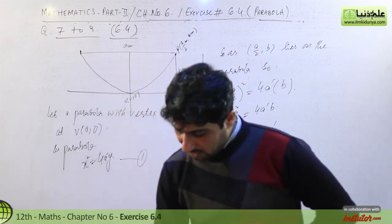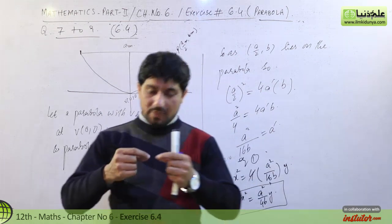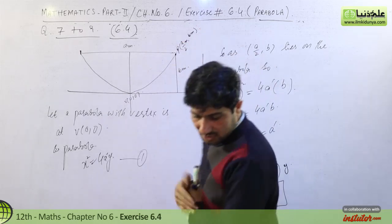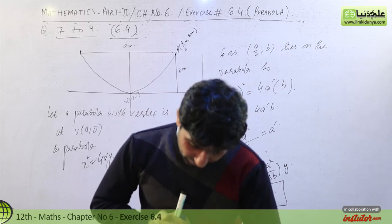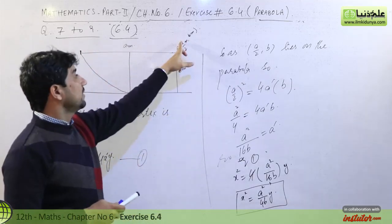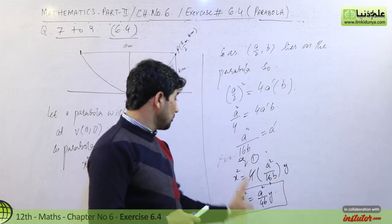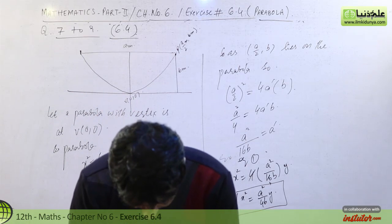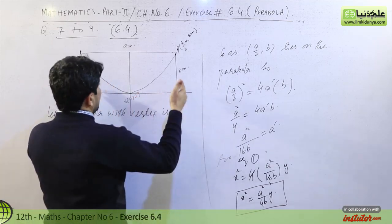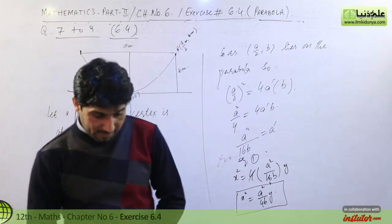Now move to the next question. An arc has a base of 100 meters and a height of 25 meters. When you set up the coordinate system, the half-span gives a point at (50, 25). The question then asks you to find the height of the arc at a point 30 meters from the center. At x = 30, substitute into the equation to find the corresponding y value, which gives you the height at that point.